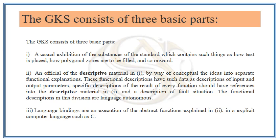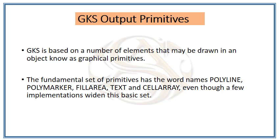GKS consists of three basic parts. The first part is how objects are placed and filled — how objects are drawn, drafted, and placed. The second part is the descriptive part — the language used to describe object shapes, primitives, and placement. The third part is bindings — the language is bound to the object or primitives used to draw or draft the required object.